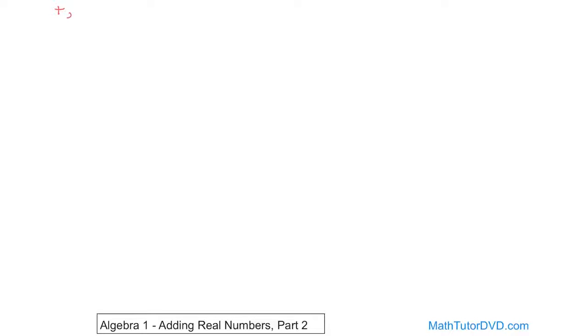Basically, if you add a positive number to another positive number, you're always going to get a positive number. This is stuff you've learned from third grade — three plus seven is equal to 10, for instance. Now, if you have a negative number and you're adding to it another negative number, you always get a negative number. So you do need to remember these rules, and that's why I'm writing them down. We'll outline both of these as important rules.